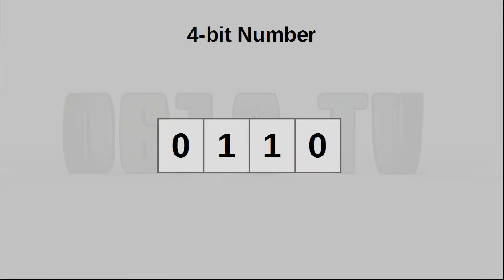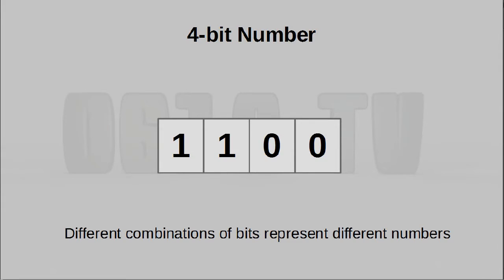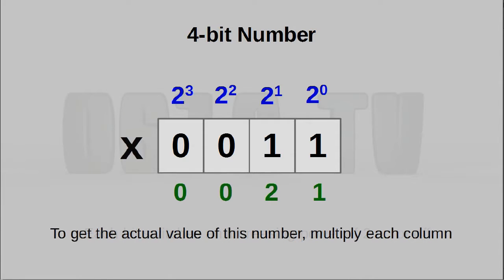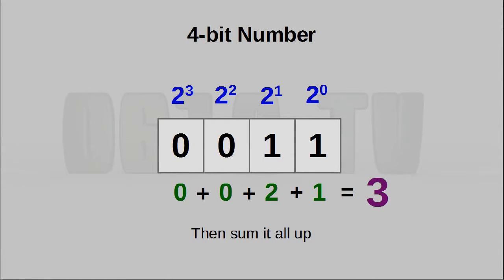For example, this is a four-bit number. By using four bits, and by using different combinations of bits, we can represent different numbers. To figure out its actual value, every digit is actually represented by an increasing power of 2. These values are actually multiplied by the value of the bit, and summed together.